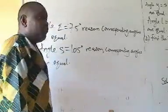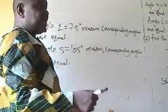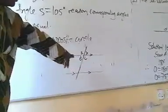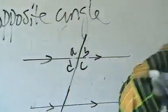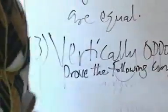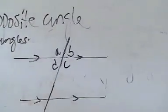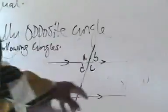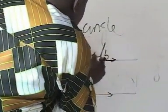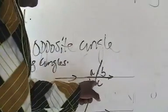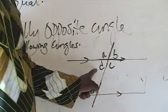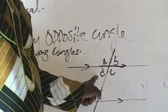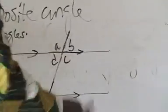Let's quickly look at the vertically opposite angle. Look at A, B, C, D — prove the following angles. Vertically opposite angles: this one is vertically opposite to A. C is vertically opposite to A. B is vertically opposite to D. Are you following? Yes sir. C is vertically opposite to A.